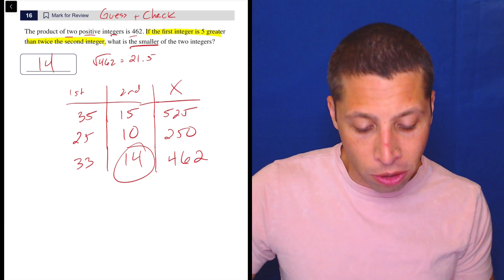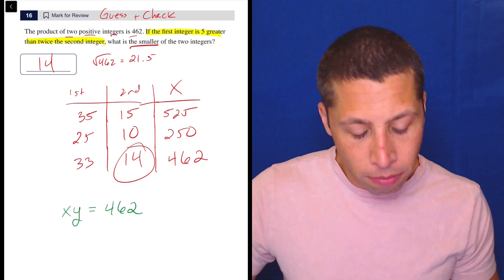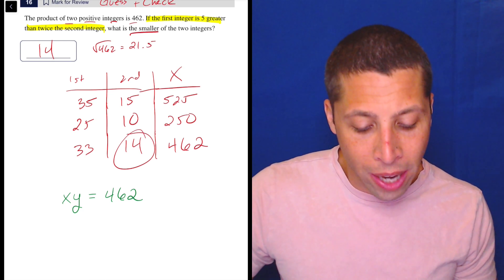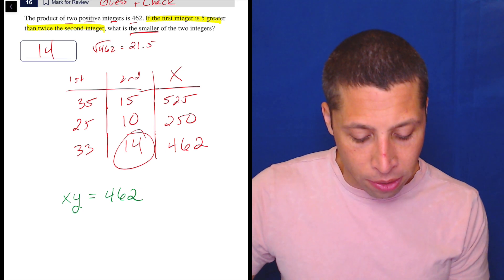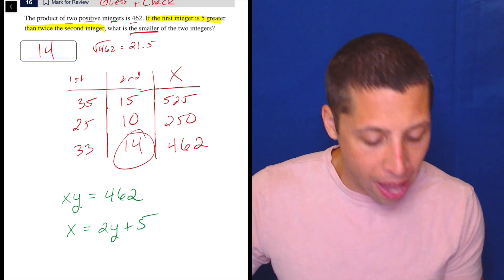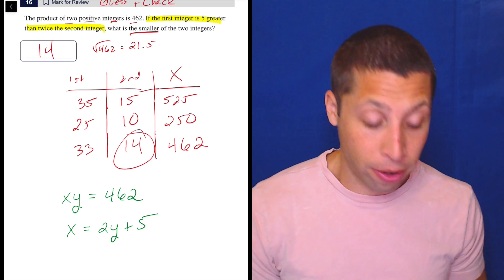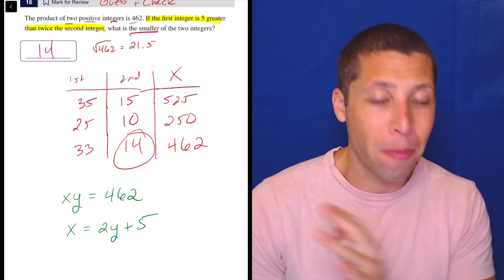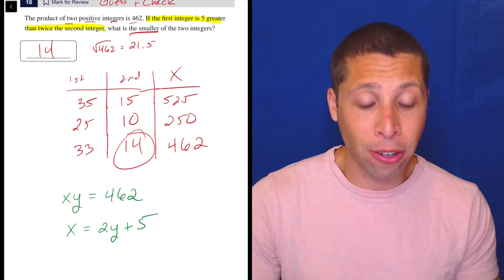But if we wanted to make equations, we could. So the product of two integers is 462. So that means we're going to have XY equals 462. Then if the first integer is five greater than twice the second, one of them is twice the second plus five. We could have written it the other way. We could have done Y is equal to 2X plus five. It doesn't matter. The point is either way at the end, I am going to worry about which one is the smaller and larger. I'm not going to try to think the X is the first integer and the Y is the second. None of that matters to me.